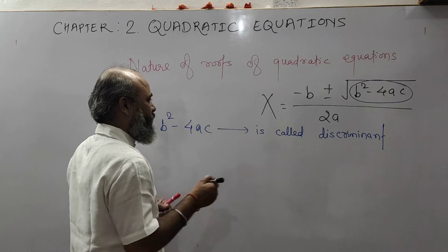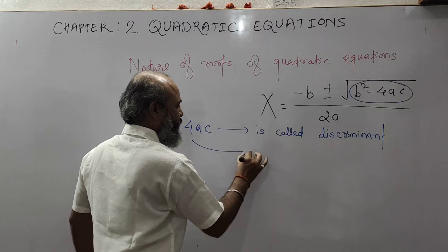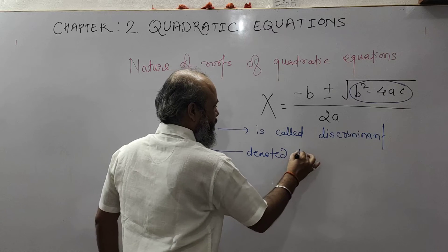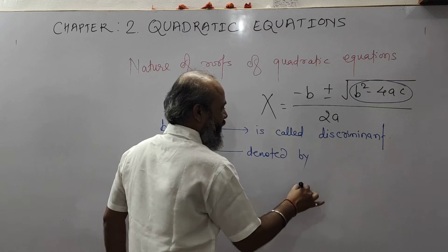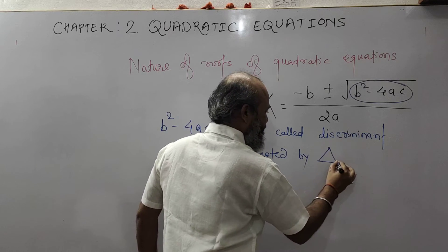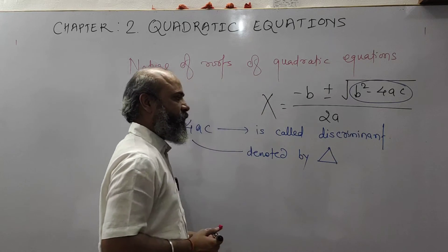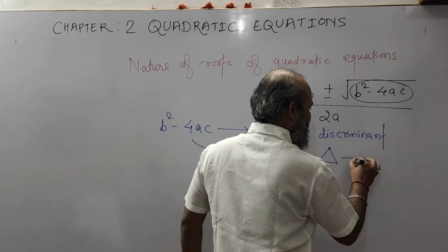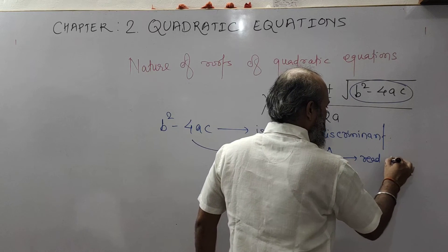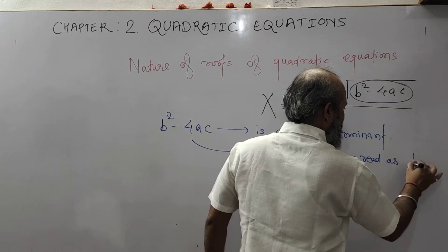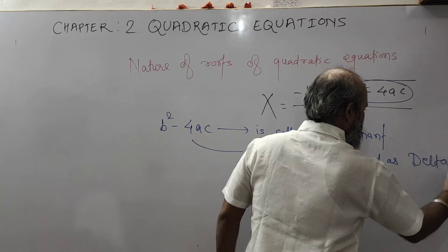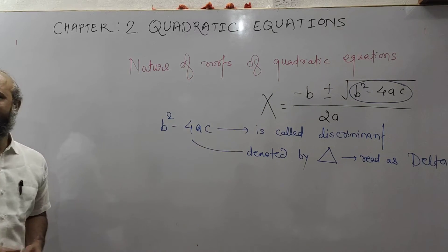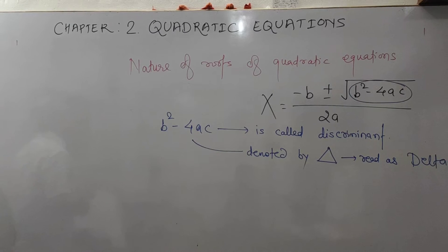So B square minus 4AC is denoted by delta. The delta symbol looks like a triangle. Delta is a Greek letter.